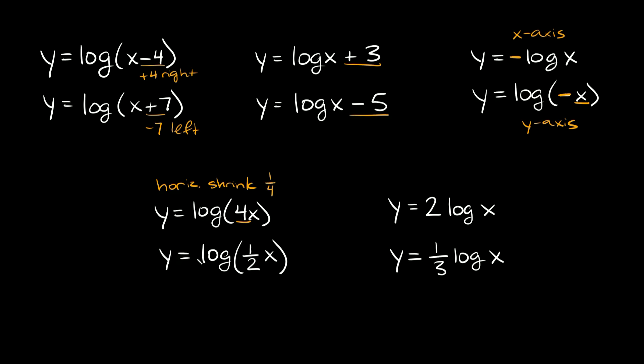Now here we have y equals log of (1/2 times x). Again, we're multiplying the x by a number inside these parentheses, so this indicates a horizontal stretch or shrink. If this number is less than 1, somewhere between 0 and 1, then this indicates a horizontal stretch. So this one's a horizontal stretch. We would say by a factor of taking the reciprocal, which would be 2 in this case.